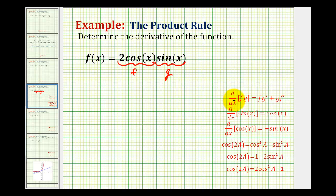The product rule states the derivative of f times g is equal to f times g prime plus g times f prime, or the derivative equals the first function times the derivative of the second plus the second function times the derivative of the first function.